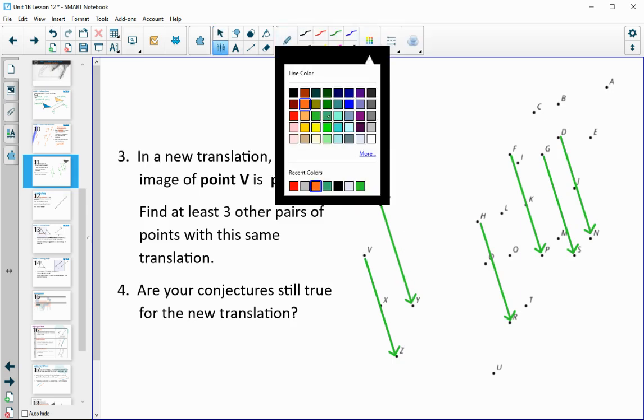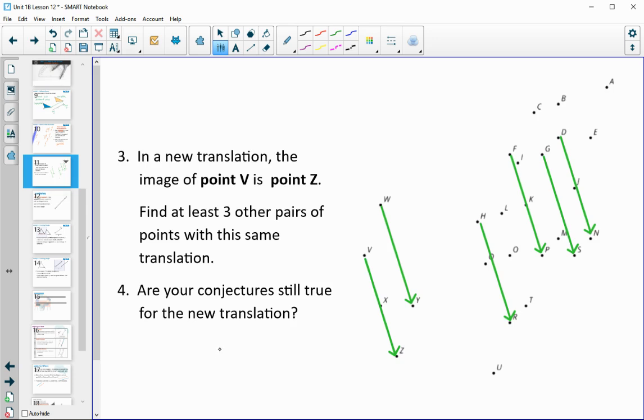Then does it appear that our conjecture from the last question still holds true? We thought that it looked like all of these translations create parallel lines, and it does look like we're still seeing parallel lines.